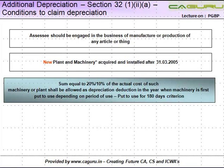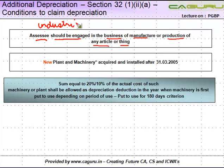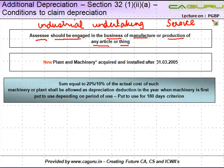The first condition is that the SSE should be engaged in the business of manufacture or production of any article or thing — in other words, it should be an industrial undertaking engaged in the business of manufacture and production of any article or thing. If you are in the service sector, for example, you will not be entitled to additional depreciation.